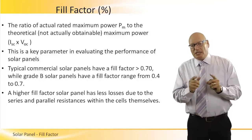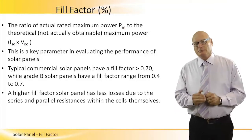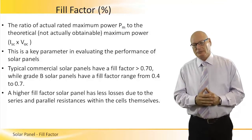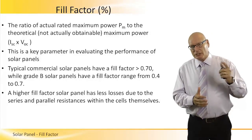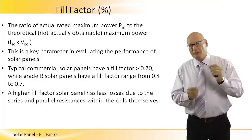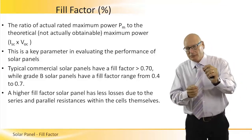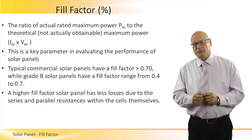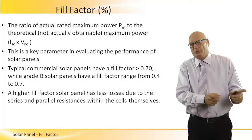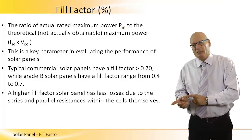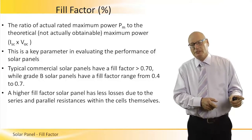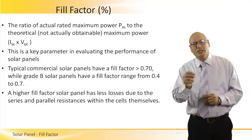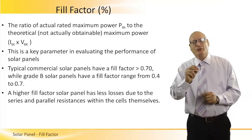This is for Grade A panels. Grade B, lower level PV panels, have a fill factor ranging from 0.4 to 0.7. Later in the session, we will talk about Grade A and Grade B when we come to select which panel to use for our system — that may be parameter number one. Grade B panels will be much cheaper than Grade A, but have lower performance. A higher fill factor solar panel has less losses due to the series and parallel resistance within the cells themselves.